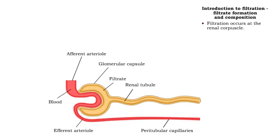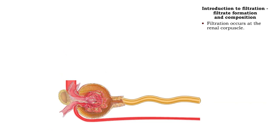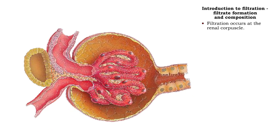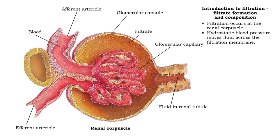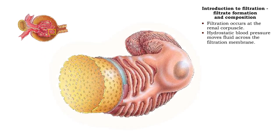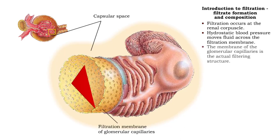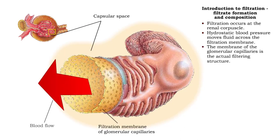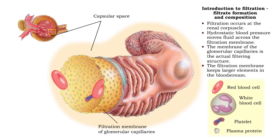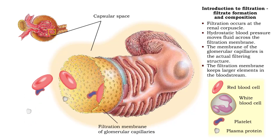Filtration occurs only at the renal corpuscle. Hydrostatic blood pressure is used to move fluid across the filtration membrane. The membrane of the glomerular capillaries is the actual filtering structure, and it keeps larger elements in the bloodstream.